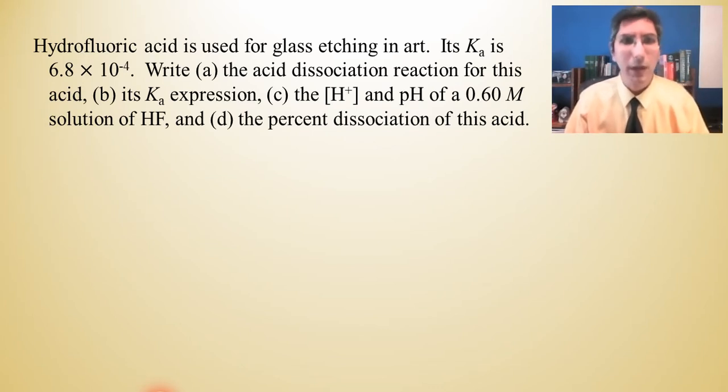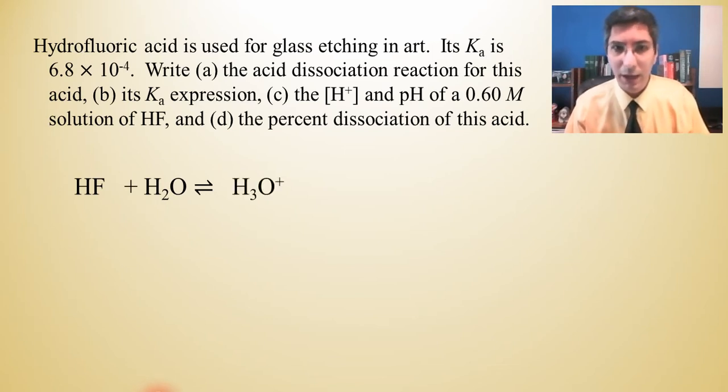We're going to start with hydrofluoric acid. So it says this is used for glass etching in art. Its Ka, its acid dissociation constant, is 6.8 times 10 to the negative 4. So we're going to start by writing the acid dissociation reaction for this acid. The first thing that you want to do is write out hydrofluoric acid, and at this point in the course I hope you feel pretty comfortable in knowing that that's HF. You should know that at this point. Now we're going to react it with water and remember the products are always going to be hydronium ion, H3O+, and the conjugate base of that acid. Just take off an H+, so we're left with F-. So there's our reaction.